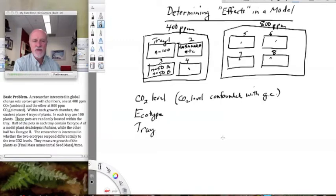We have 50 of each in each tray. And of course, then tray comes into this too. So we need to try to figure out the relationship between these three variables. Is there anything else? I don't think so. So we have CO2 level, ecotype, and tray.